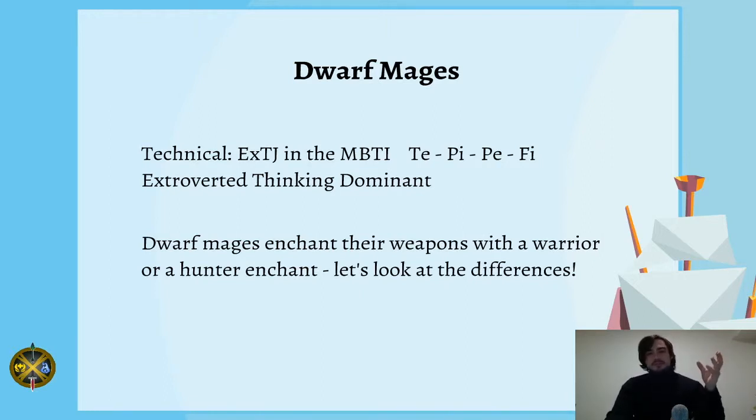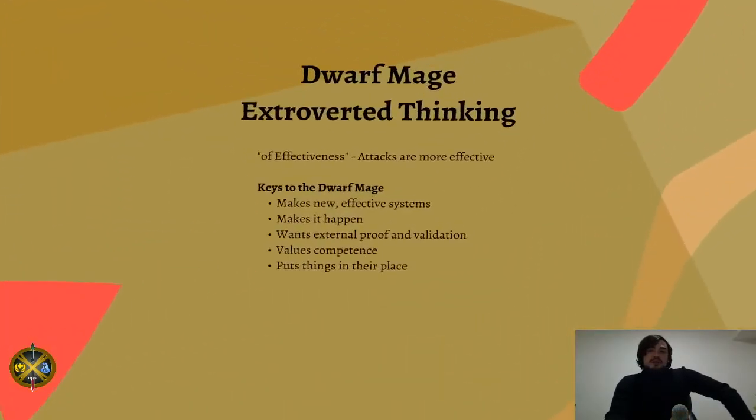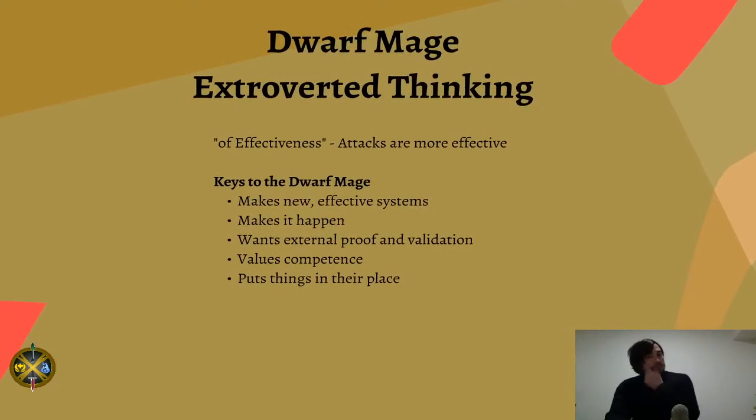You support that by gathering information internally through an introverted perceiving function as your auxiliary function. After that, your third function is extroverted perceiving and your fourth is introverted feeling. Dwarf mages enchant their weapons with a warrior or hunter enchant. In this video we'll look at the differences.